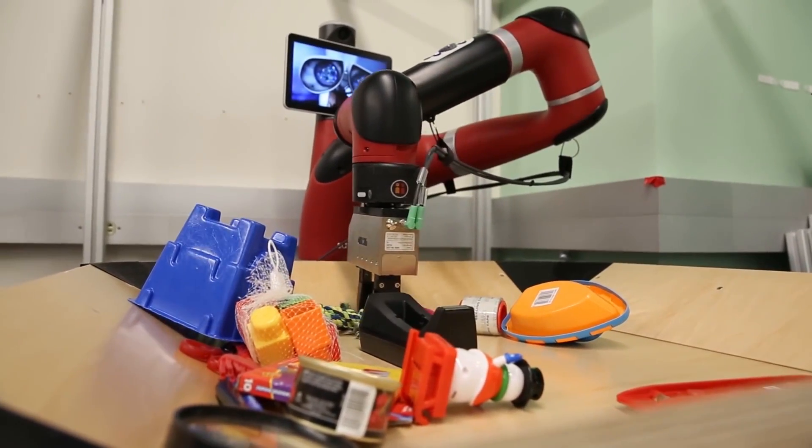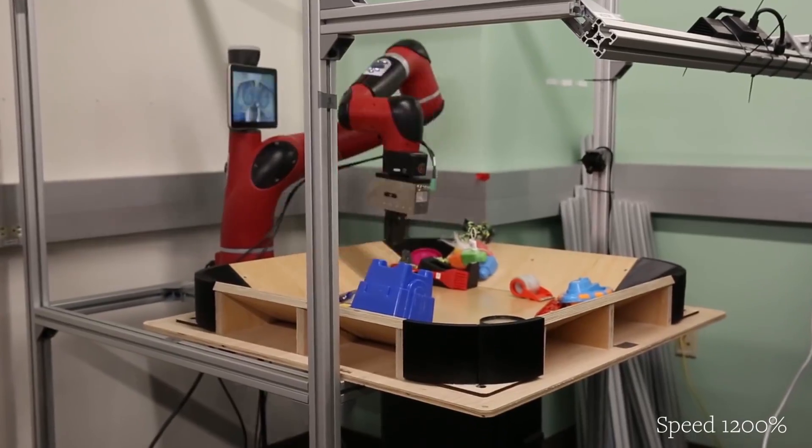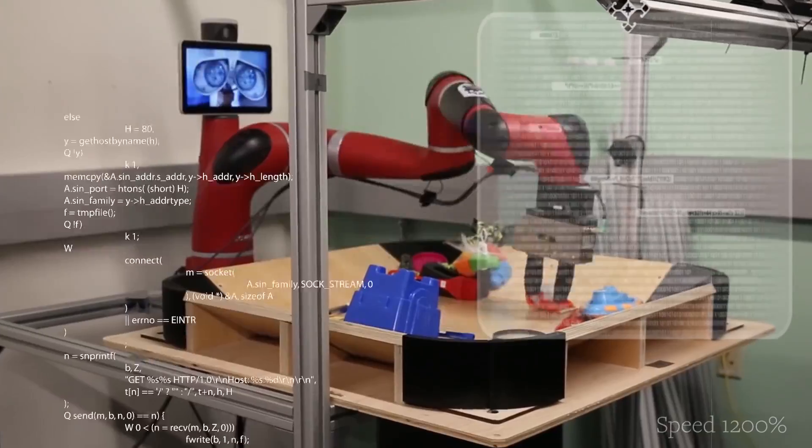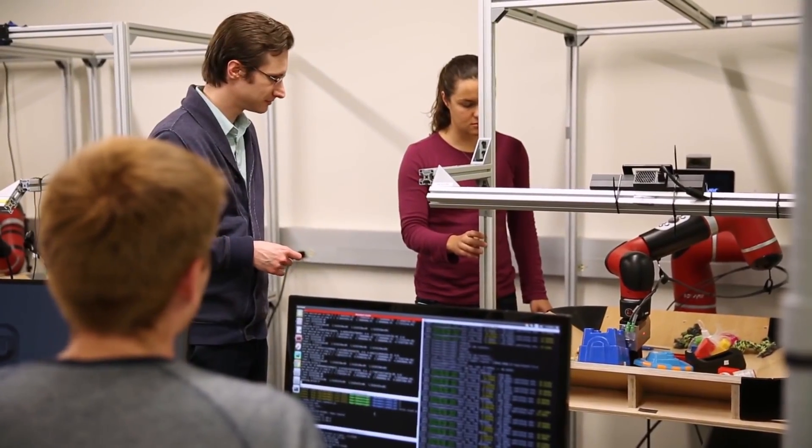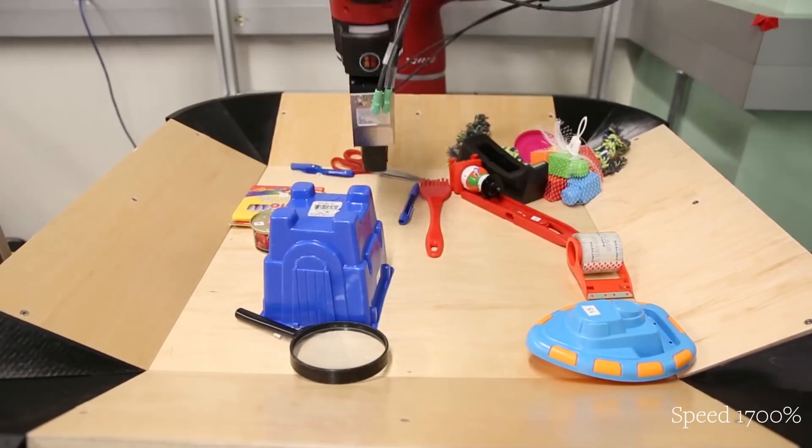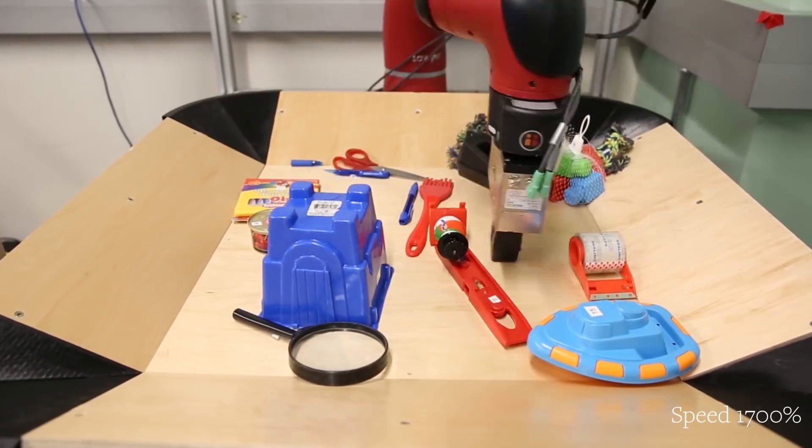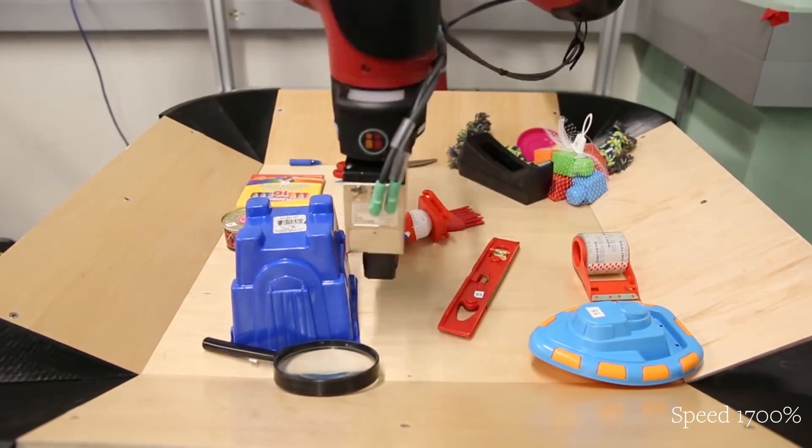Meet Vestry. Instead of giving this robot all kinds of measurements for every object and task it may encounter, the usual way they're programmed, researchers let Vestry play around with stuff, getting used to its own movements while learning the look, shape, and feel of the objects.